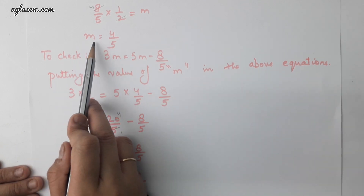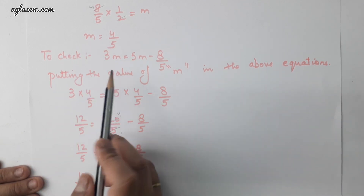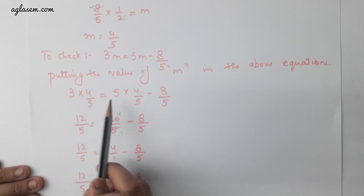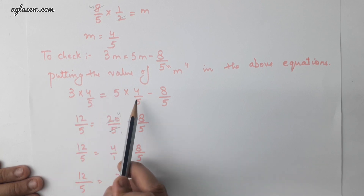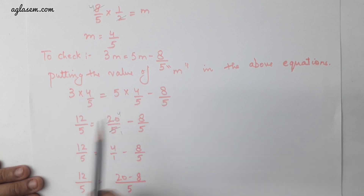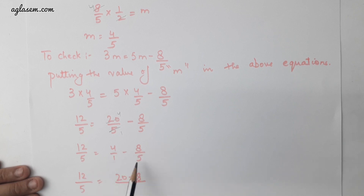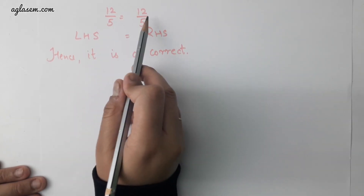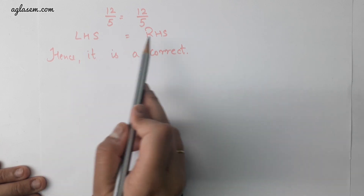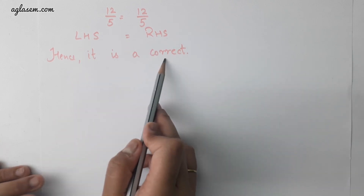To check, we will put the value of m in the given equation. We get 3 into 4 by 5 equals to 5 into 4 by 5 minus 8 by 5, giving 12 by 5 equals to 20 by 5 minus 8 by 5. Taking LCM both sides, 12 by 5 equals to 20 minus 8 divided by 5, so 12 by 5 is equal to 12 by 5. Therefore, LHS equals to RHS. Hence it is correct.